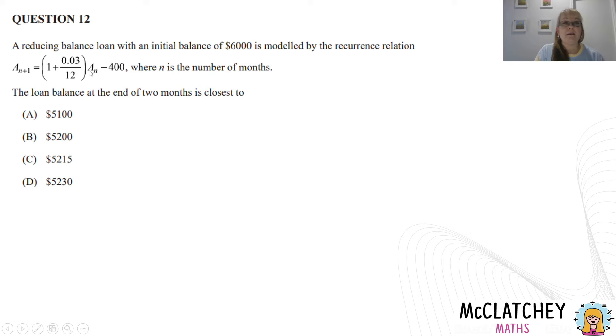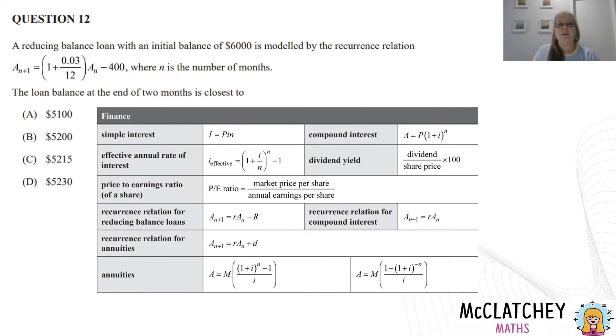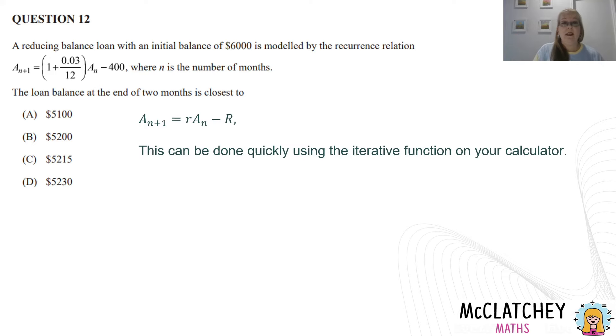We times that by the amount at the beginning, we're told that $6,000. And then we take $400 away. So as we did with the previous question, we're going to find that recurrence relation on our formula sheet. That helps us to get a bit of a picture of what's going on. This R is the repayment. This, that's our value for R in there. And so just seeing where it is on the formula sheet helps you to get a picture. Ah, I'm going to use a recurrence relation. I'm going to repeat that twice.